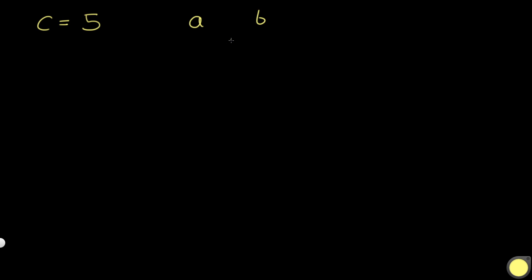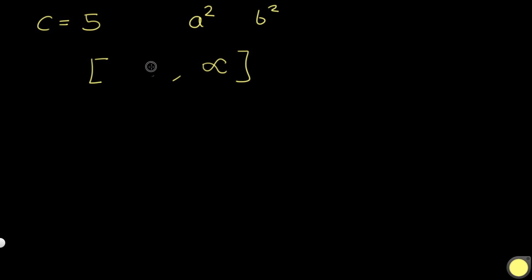Now, how are we going to look for a and b — what is the search space? It tells us that a and b are integers, so we could have everything from negative infinity to positive infinity. But we can get rid of all the negative numbers, because we're squaring these values. Squaring a negative number makes it positive — for example, negative 10 squared equals 10 squared, both equal 100. So we don't need to worry about negative values, and our range is now 0 to infinity.